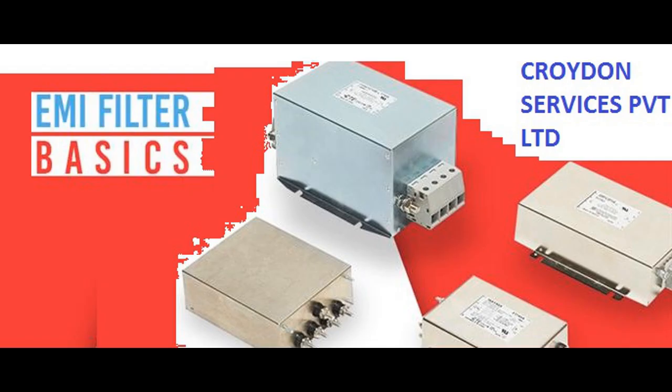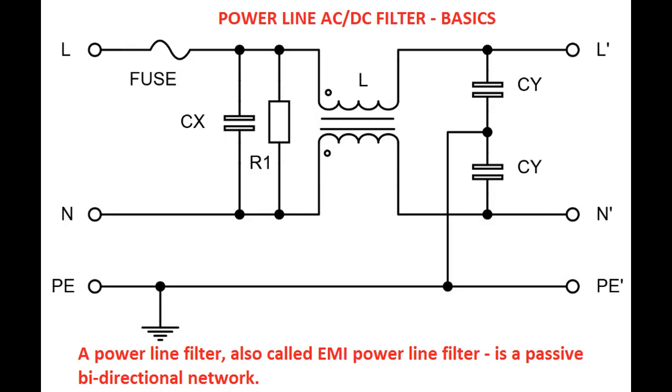Power Line Filter Basics: A power line filter, also called EMI power line filter, is a passive bi-directional network, electrical equipment which effectively filters the particular frequency point in the power line or the frequency out of the particular frequency point.